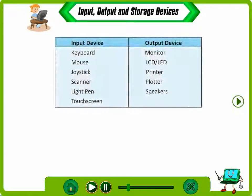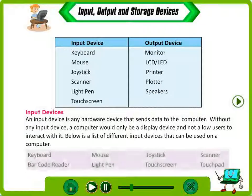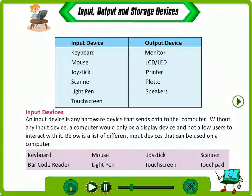Some commonly used input devices include keyboard, mouse, joystick, scanner, light pen, and touch screen. Output devices include monitor, LCD or LED, printer, plotter, and speakers. An input device is any hardware device that sends data to the computer. Without any input device, a computer would only be a display device and not allow users to interact with it.